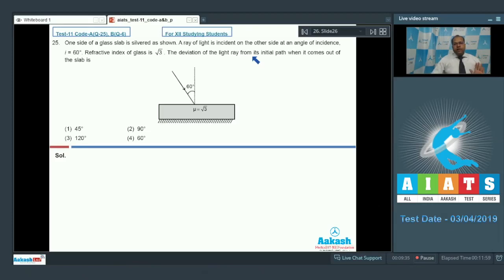So whatever is the deviation occur, that is from the reflecting surface only. So in that situation, if I consider this as my reflecting surface, then the light ray incident in this direction and it incidents at an angle of 60 degree. So when angle of incidence is 60 degree, then angle of reflection is also 60 degree. So the deviation is this.